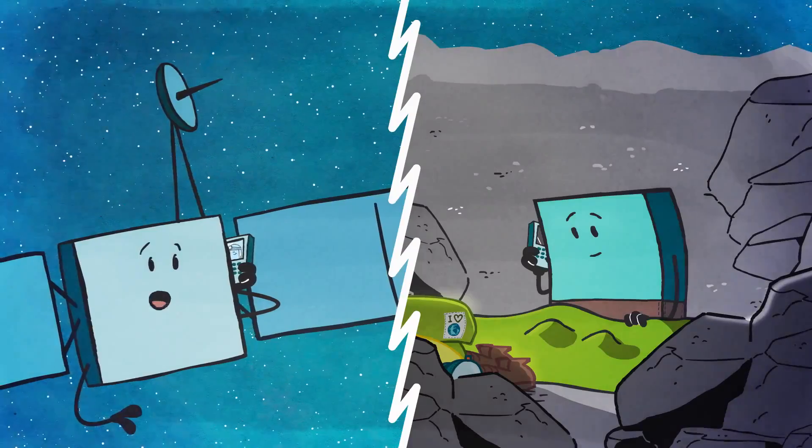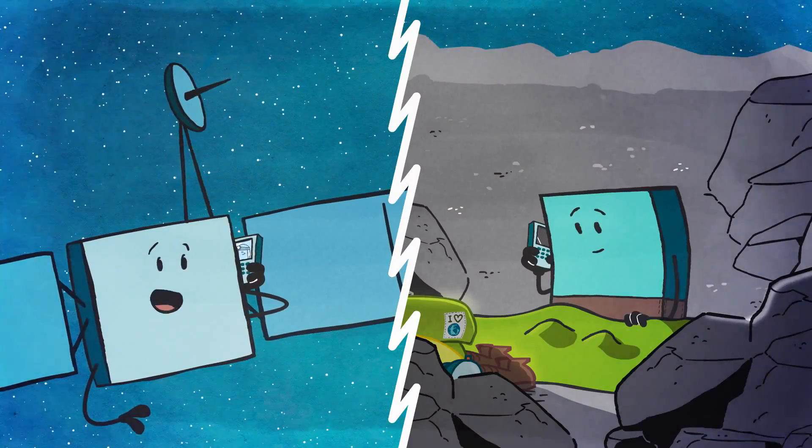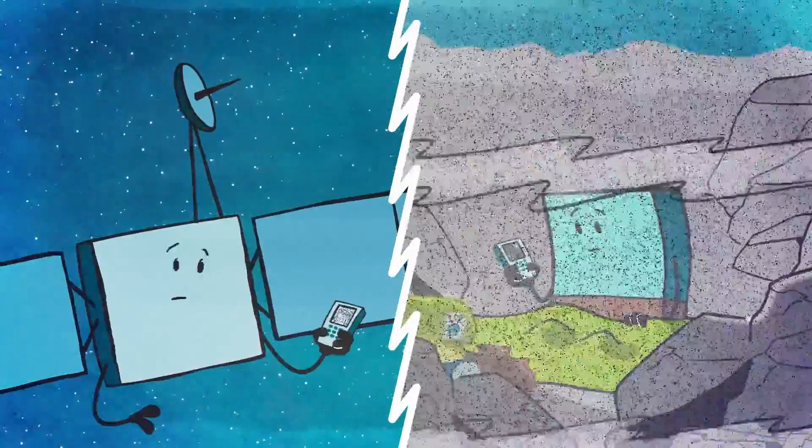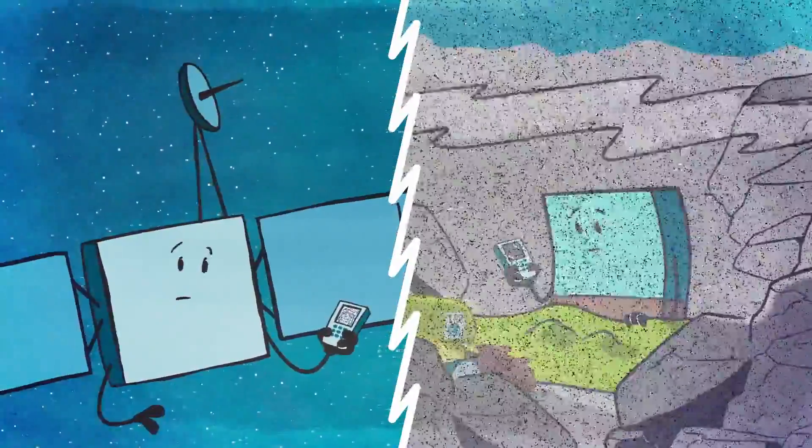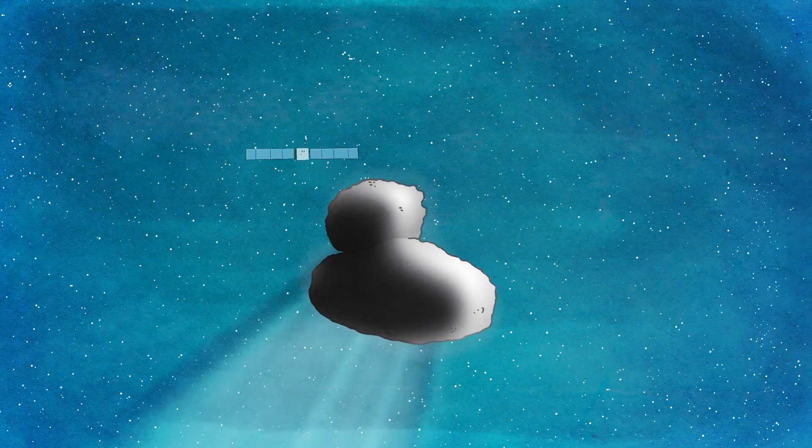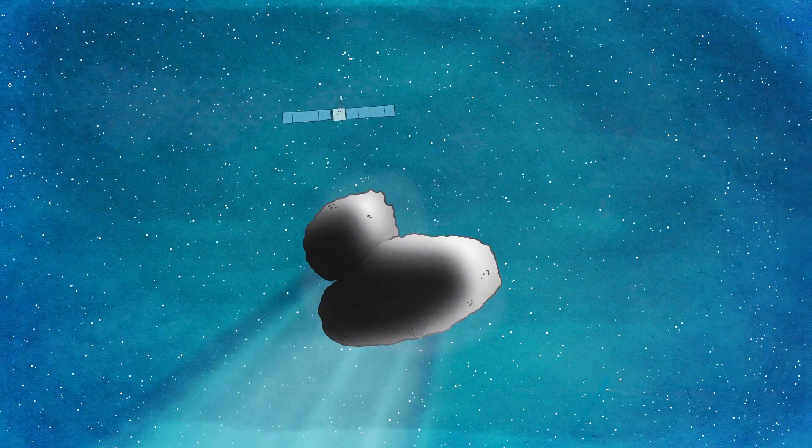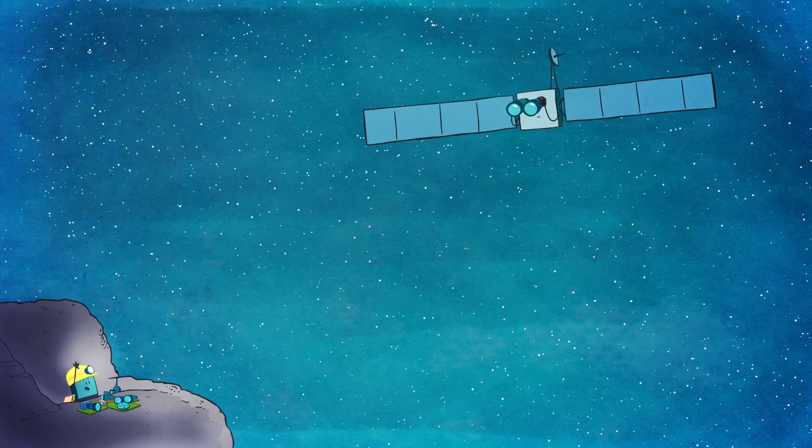Rosetta wanted to tell Philae all that had happened while he had been asleep, and the many exciting things she had learned about the comet, but the connection wasn't very good. It was very frustrating, and Rosetta had to move to different locations to try to find the best spot for a better connection.